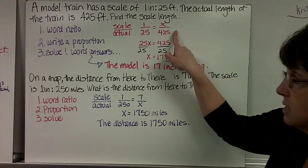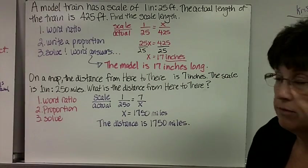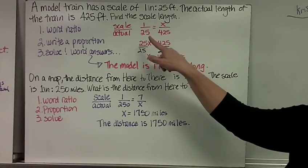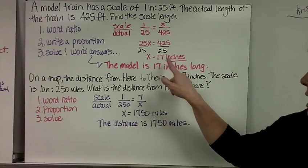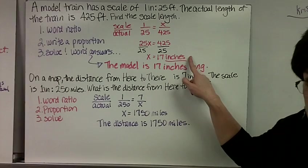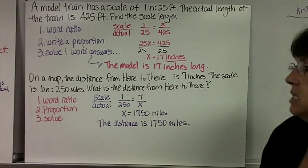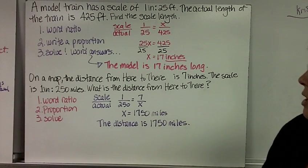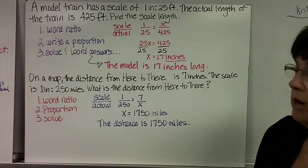I know to put that in the denominator because it says the actual length of the train is 425 feet. Now I cross multiply: 25 times x equals 425. Divide by 25, x is 17 inches. Now I'm putting my words back. The model is 17 inches long. When you have these word problems, you have to write a word sentence answer.